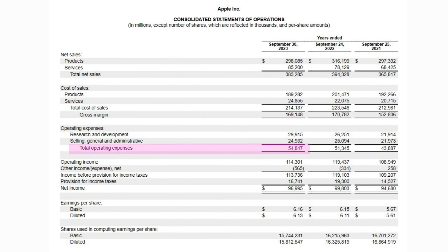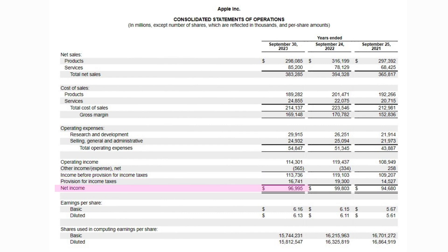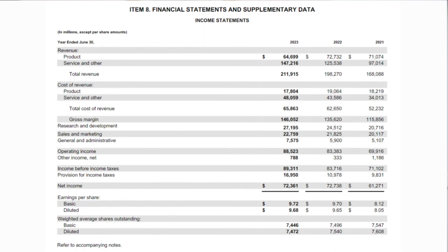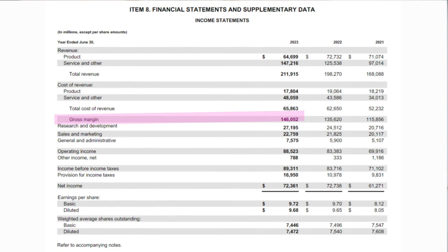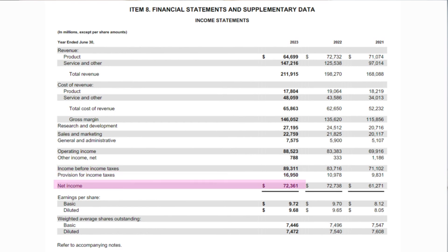Then we have the operating expenses — the indirect costs — and then the operating income. The next section is other income, which is the non-operating income. The next line gives us income before taxes, then the provision for income taxes, and finally the bottom line net income. The EPS, or earnings per share, is a disclosure requirement for SEC filers but is a topic for a future video. As a bonus, here is the filed income statement for Microsoft — again the same multi-step format, starting with sales, cost of sales, and gross margin, then research and development costs, general and administrative expenses as operating expenses, operating income, other income net as non-operating income, income before income taxes, provision for tax, and finally net income.